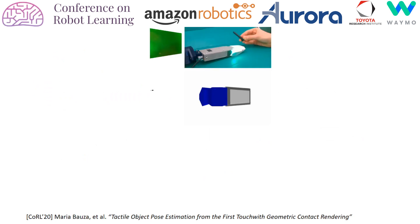In this video, we show qualitative results on our pose estimation from a single image. We compute results for six objects, as you can see in the next slide.